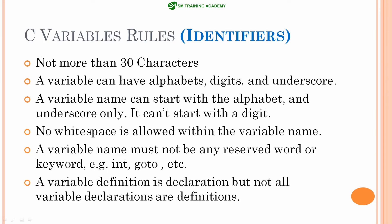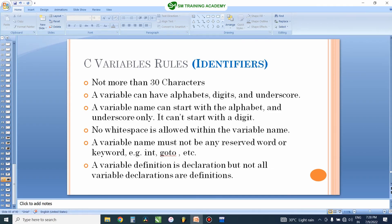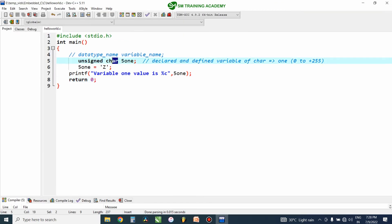The fourth rule is that no white spaces are allowed within the variable name. You should not leave a blank space within the variable name — you can use an underscore, alphabets, or even a digit between two alphabets, but no white spaces. Also, a variable name must not be any reserved keyword in C language. For example, char and unsigned are reserved keywords in C language and you should not use these as variable names.